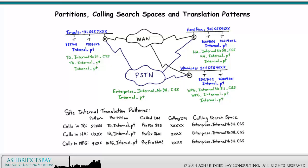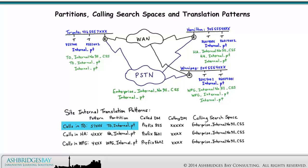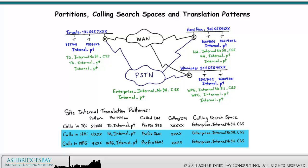Abbreviated dialing within sites is enabled using site internal translation patterns. We have a five-digit pattern 57XXX for calls in Toronto in the Toronto internal partition. The translation pattern prefix is 8, and the site code 55 masks the caller ID to five digits, and looks for the translated number in the Enterprise Internal No 911 calling search space. We have similar translation patterns for the Hamilton and Winnipeg sites.